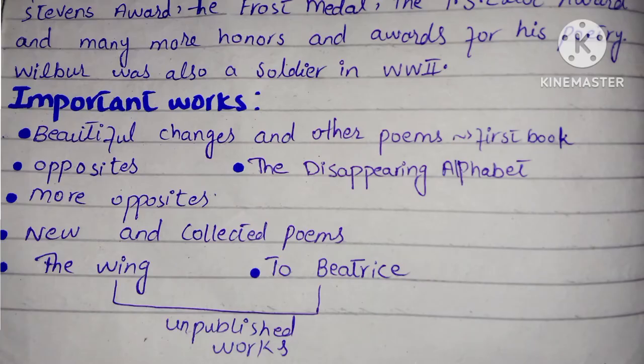Wilbur was also a soldier in World War II. His important works include 'Beautiful Changes and Other Poems,' which is his first book. He also published books for children: 'Opposites,' 'The Disappearing Alphabet,' and 'More Opposites.' Another major work is 'New and Collected Poems.'